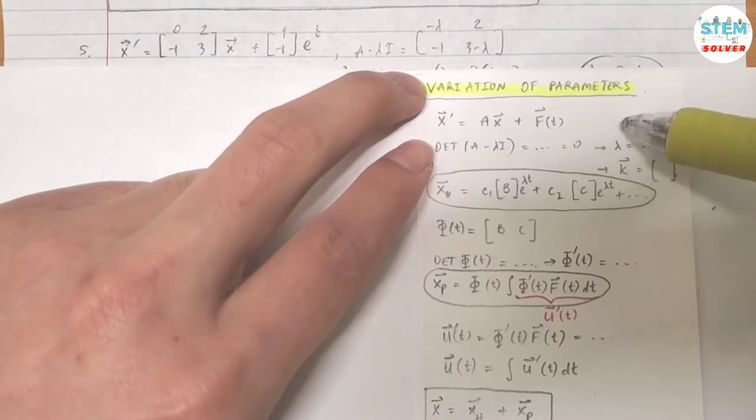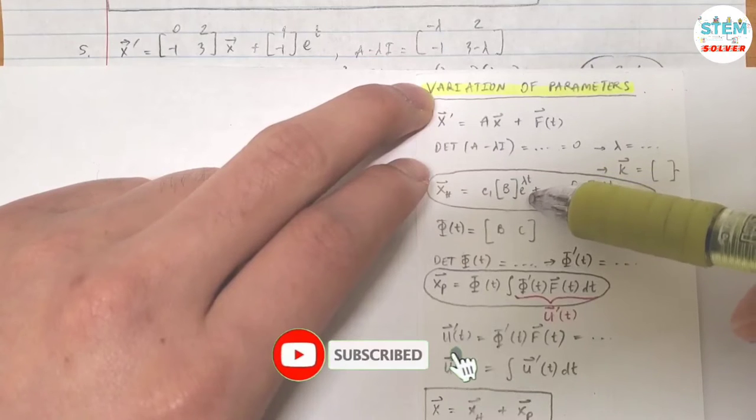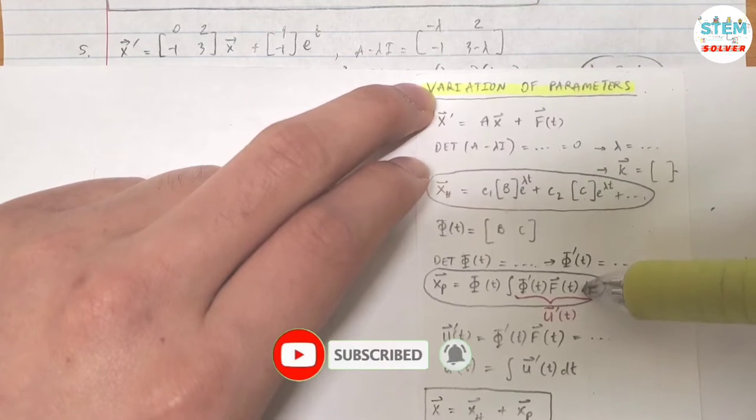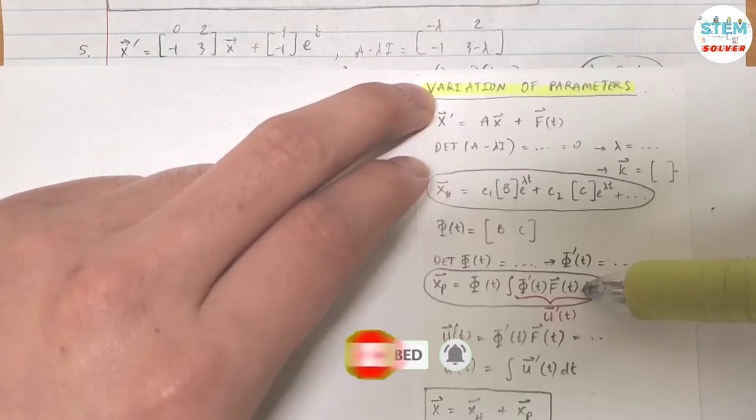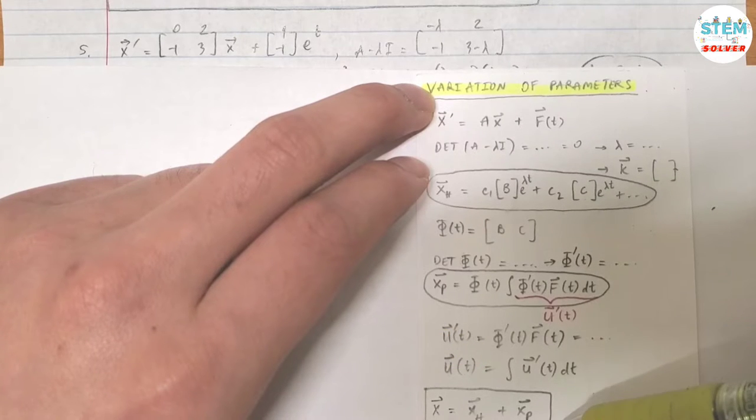To use Variation of Parameters, first you need to find the homogeneous solution. Then you will find the non-homogeneous solution and add them together. That gives you the final answer.